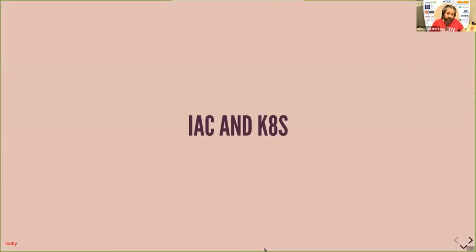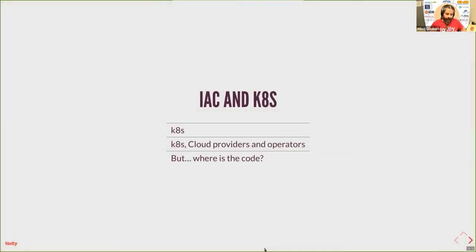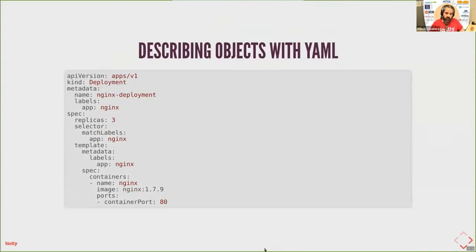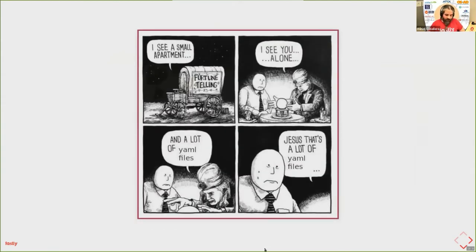Let's now cover Kubernetes and how infrastructure as code can be applied to it. You probably know a lot about Kubernetes — the Kubernetes API offers a big set of objects, and to deploy your application you need to push a specific configuration object that Kubernetes will deploy for you. This is the classic example of pushing an nginx container to a Kubernetes cluster. As you may have already realized, Kubernetes is a lot about YAML.